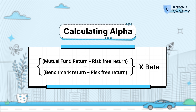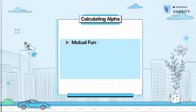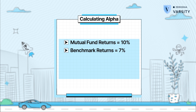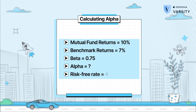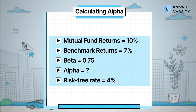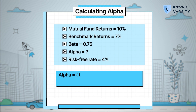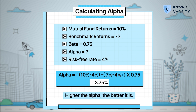Assume a certain fund has given you a return of 10%. Its benchmark returns for the same duration is 7%. The beta of this fund is 0.75. How much do you think is the alpha, assuming the risk-free rate is 4%? Well, if you apply the formula of alpha, you'll get the alpha as 3.75%. Needless to say, higher the alpha, the better it is.